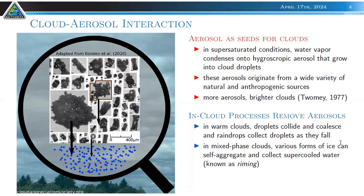In mixed-phase clouds, frozen hydrometeors can aggregate, sediment, or collect droplets — often associated with riming. Again, collision events lead to removal of aerosol by number. These microphysical processes are expected to have an impact on cloud macrophysics, so what is a good framework to understand the connection between the two?